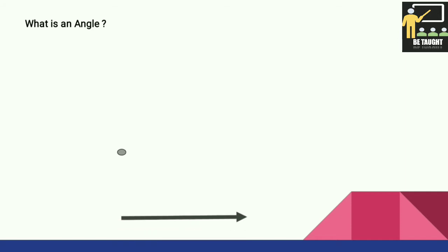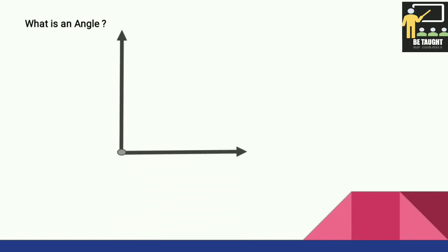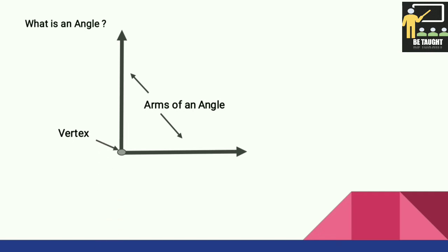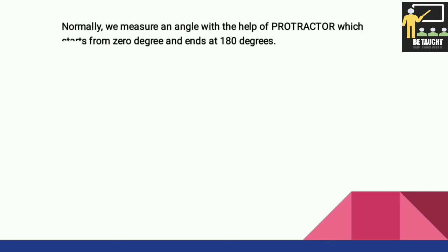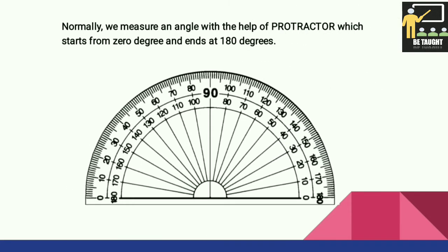So what is basically an angle? Suppose a point is given to us — we draw two rays. These are known as the arms of an angle, and the point is known as the vertex.